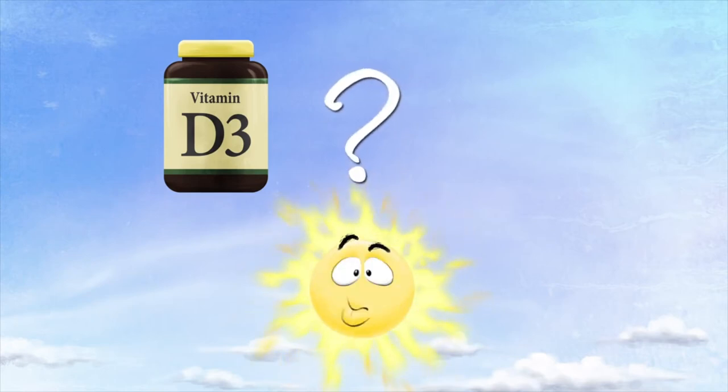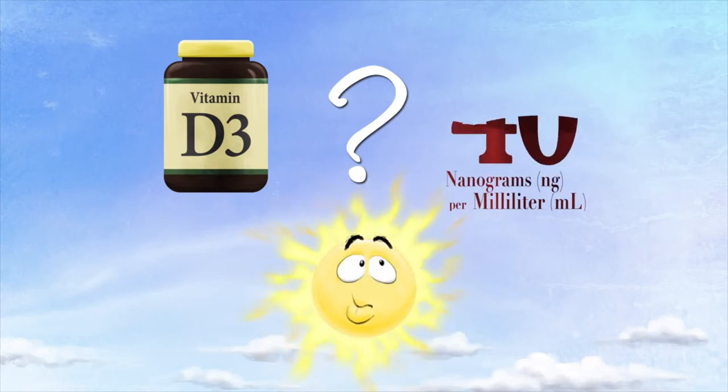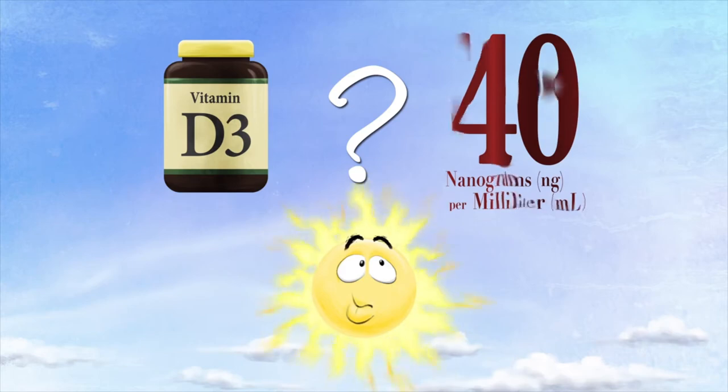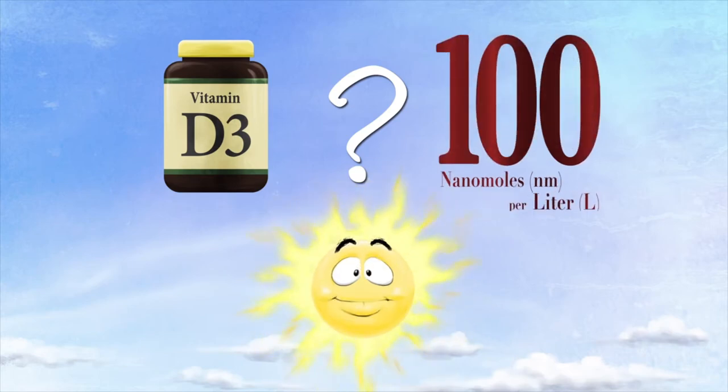But how do you find out if you have enough vitamin D? You can, of course, have a blood test. A reading of at least 40 nanograms per milliliter or 100 nanomoles per liter is optimal.